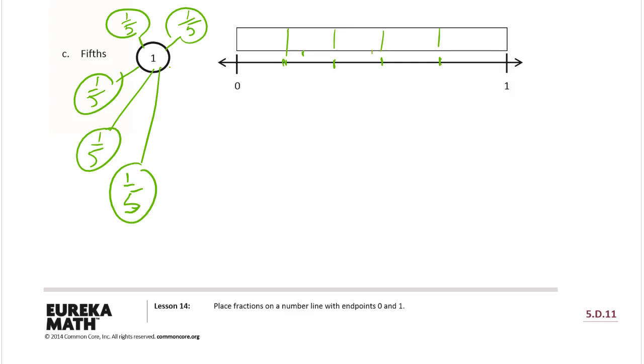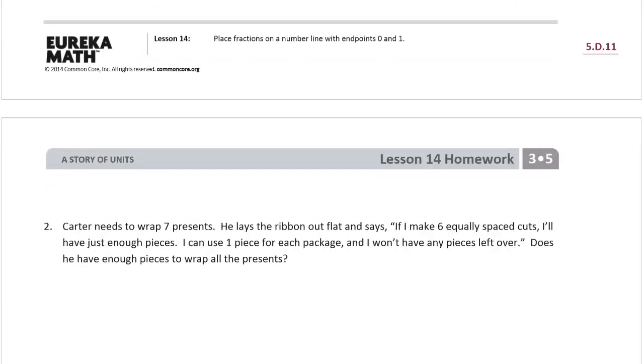But labeling is easy. 0 5ths, 1 5th, 2 5ths, 3 5ths, 4 5ths, and 5 5ths. Looks like my 5th is a little bit too big, but close enough.